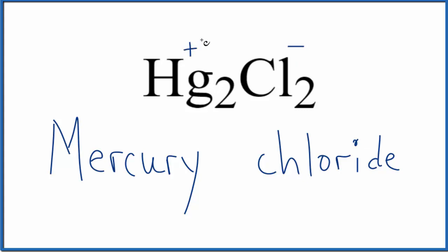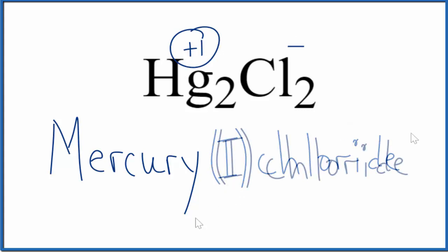2 times the plus 1, that'll balance out the 2 times the minus 1 here. So the net charge is 0. Because of that, we write Roman numeral 1 between the names. So the correct name for Hg2Cl2 is mercury 1 chloride.